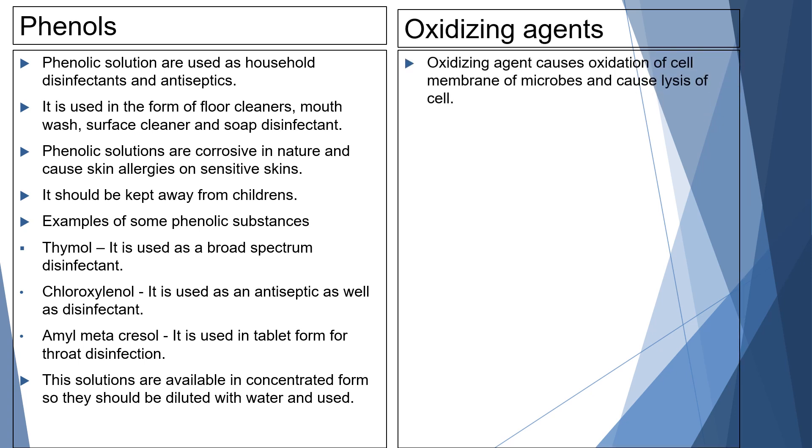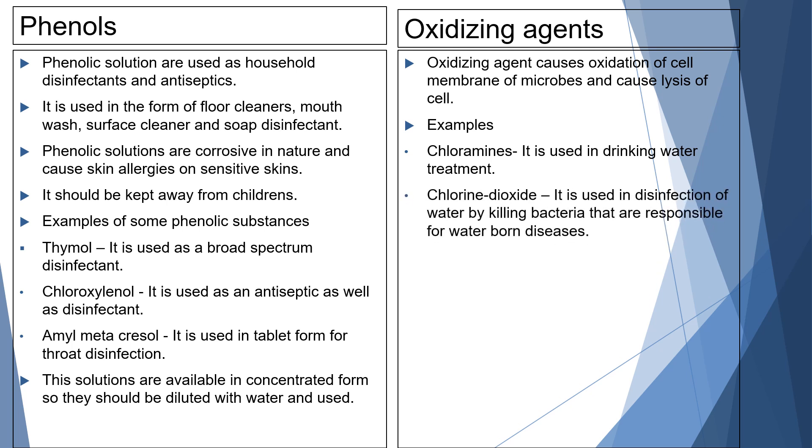The next one is oxidizing agent. Oxidizing agent causes oxidation of cell membrane of microorganism and cause lysis of cell. The examples of oxidizing agent are chloramines. It is used in drinking water treatment.